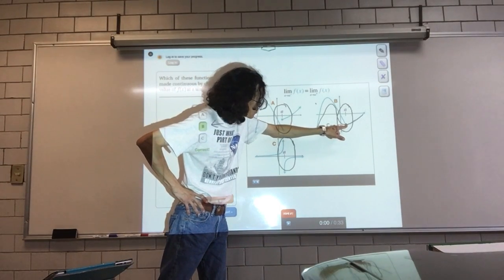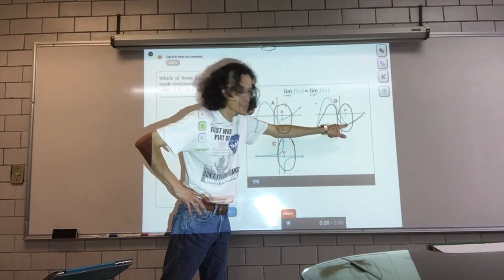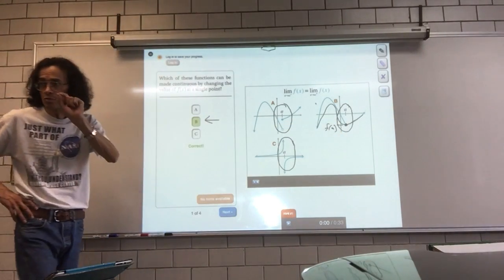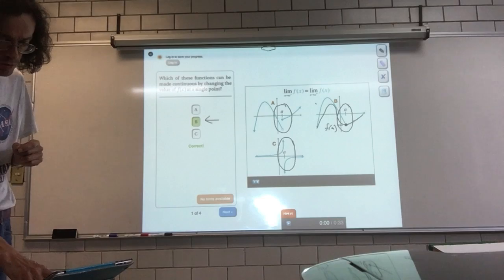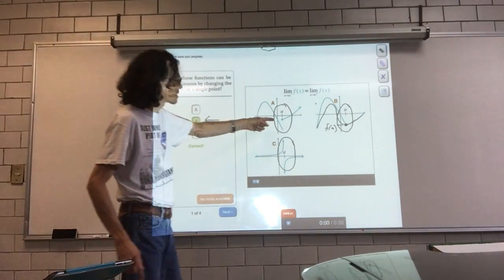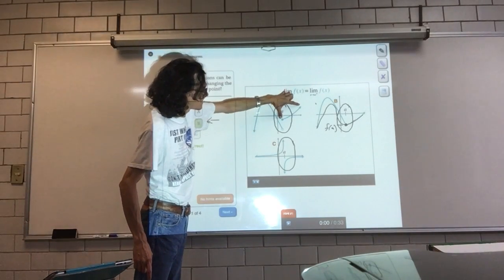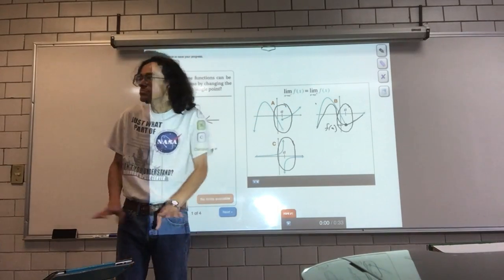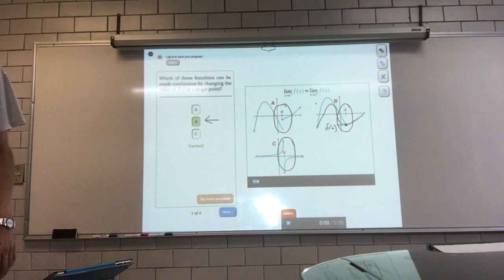If we can change the value of f of a, then we can change it from a function discontinuities to a function continua. In this, we have to change the values. We have to translate this to the function. And this is impossible. This is a hyperbolic.